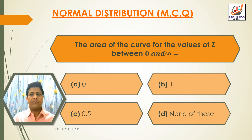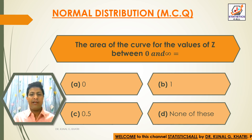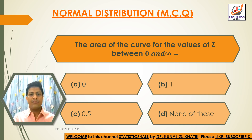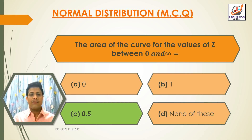Next question: the area of the curve for the values of Z between 0 and infinity is equal to — Option A: 0. Option B: 1. Option C: 0.5. Option D: none of these. The answer is Option C — 0.5. The area between 0 and infinity is equal to 0.5.